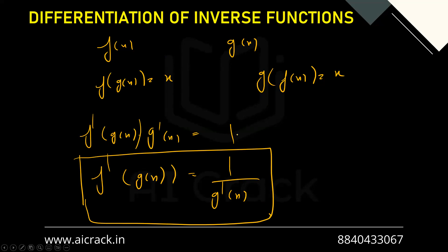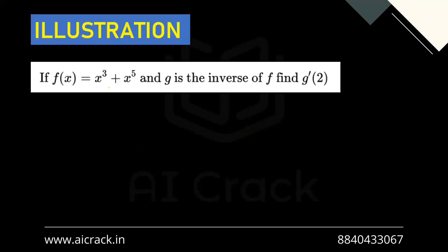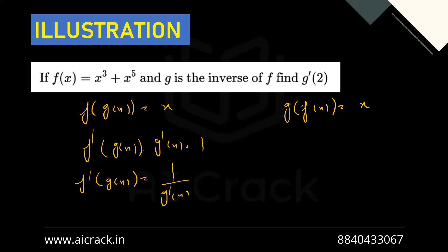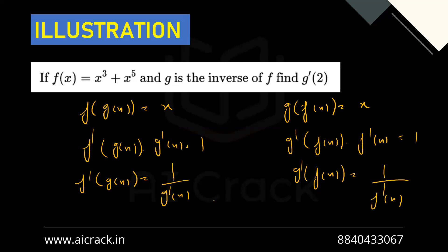Let's look at this example: if f(x) = x³ + x⁵ and g is the inverse of f, find g'(2). Since g is inverse of f, f(g(x)) = x and g(f(x)) = x. Differentiating f(g(x)) = x gives f'(g(x))·g'(x) = 1. Differentiating g(f(x)) = x gives g'(f(x))·f'(x) = 1, so g'(f(x)) = 1/f'(x).